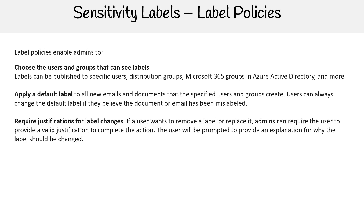Require justifications for label changes. If a user wants to remove a label or replace it, admins can require the user to provide a valid justification to complete the action. The user will be prompted to provide an explanation for why the label should be changed.